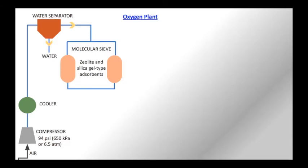After removing water vapor, the pretreated air is passed through a molecular sieve which has adsorbents like zeolite and silica gel. These adsorbents are commonly seen in packaging to reduce moisture content.